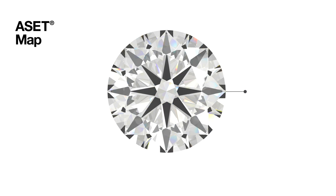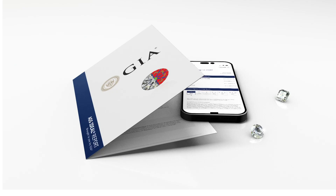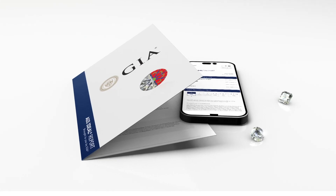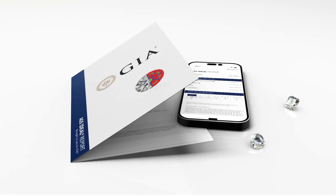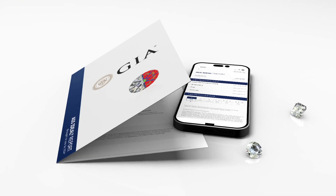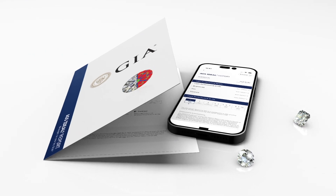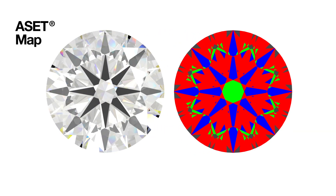Gray represents light leakage — areas that do not produce brilliance or fire. As an optional addition to your AGS Ideal Report, the asset map gives the unique thumbprint of a diamond.